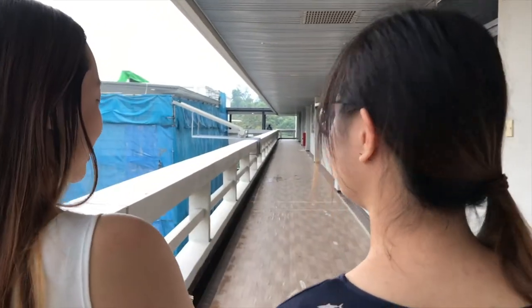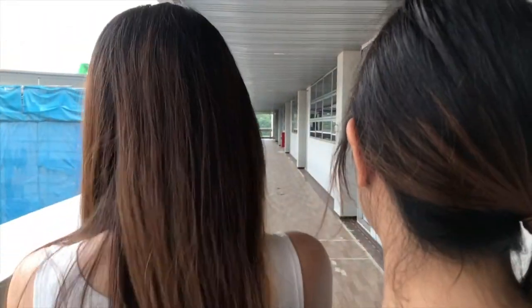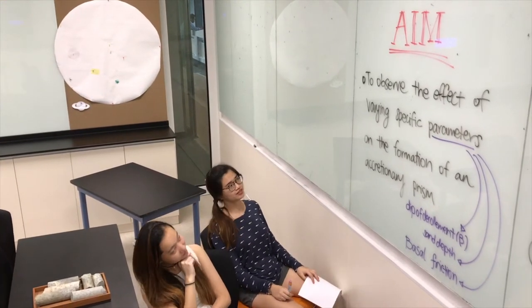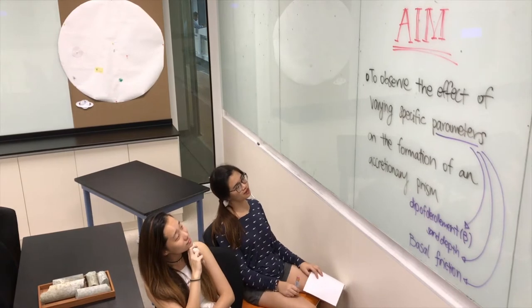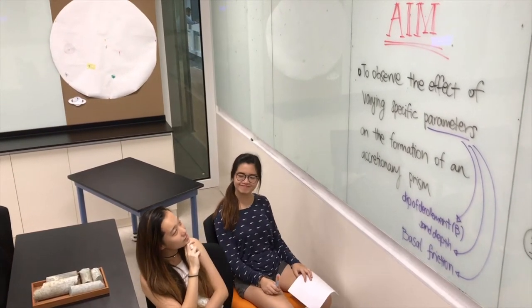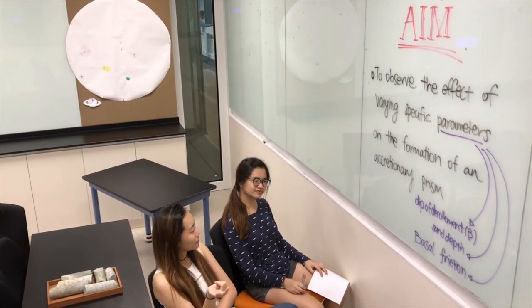Like the one here. I hope Judith doesn't set a very hard paper though. Me too. Alright, I think this shall be the aim of our experiment — to observe the effect of varying specific parameters on the formation of an accretionary prism. The specific parameters we'll be using would be the dip of décollement, the sand depth, and the basal friction.